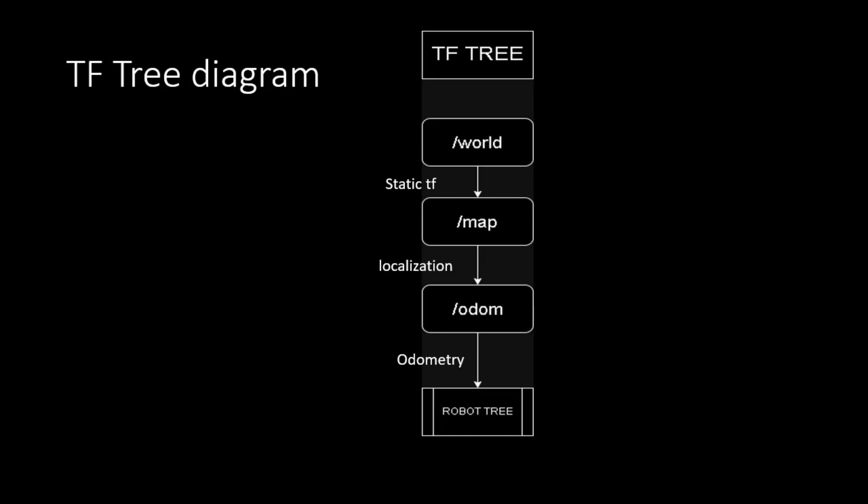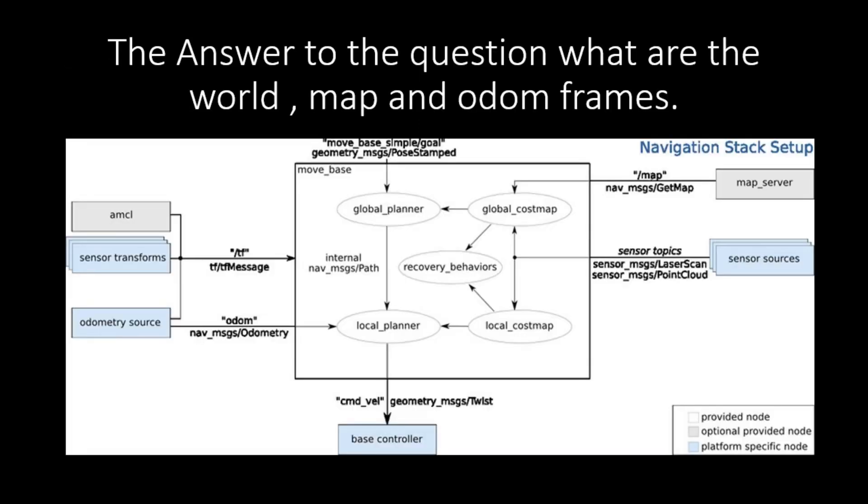The world frame, as explained before, is the super parent which is located at the root of the TF tree. Map frame is created by the map server which defines a coordinate system of the environment where the robot can move. This is a static coordinate frame with respect to world frame. This frame is loaded by the map server which loads the map.